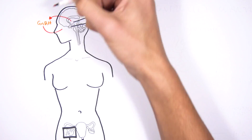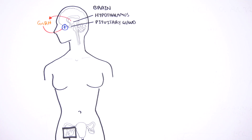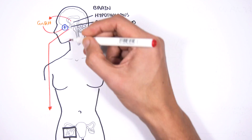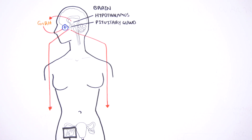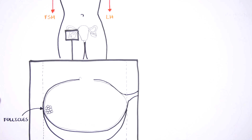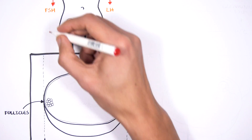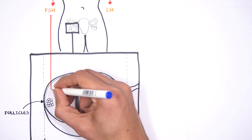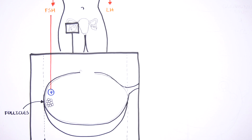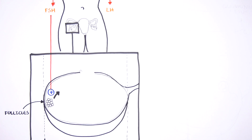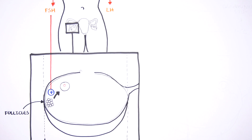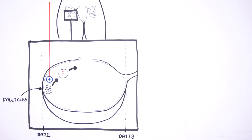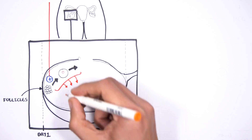GnRH stimulates the pituitary gland to release follicle-stimulating hormone, or FSH, and later, luteinizing hormone, or LH for short. Follicle-stimulating hormone travels to the ovary, where it stimulates the development of some follicles. During the development process, the follicles will produce estrogen, an important hormone for female menstruation.